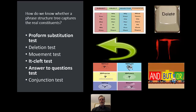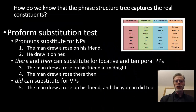The question is: how do we know whether a phrase structure tree captures the real constituents? Linguists have come up with some tests to demonstrate whether a phrase structure is the right one or not. The first is the proform substitution test. Then we have a deletion test, movement test, it-cleft test, answer to questions test, and conjunction test. We'll go through each in turn.